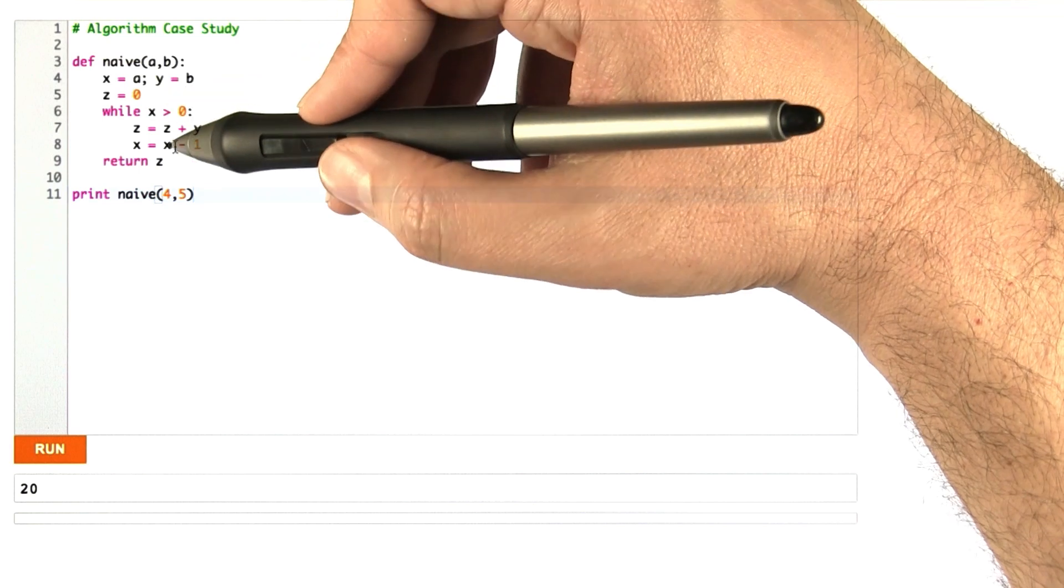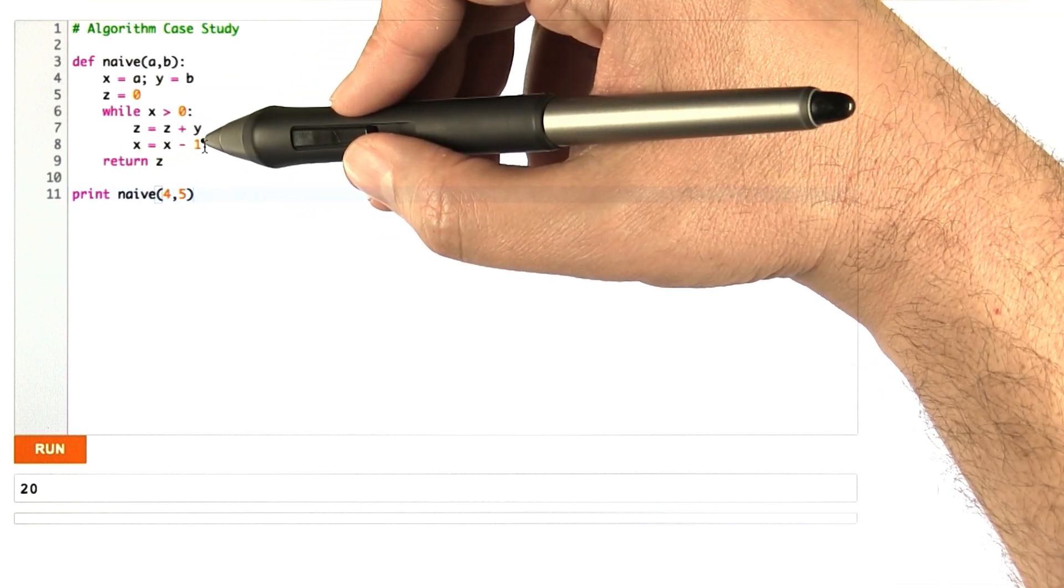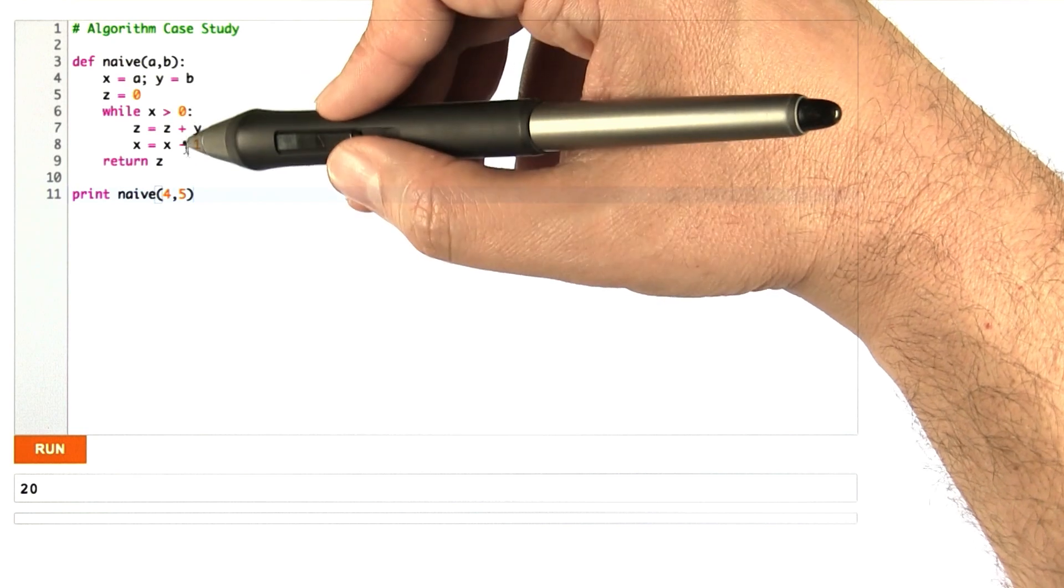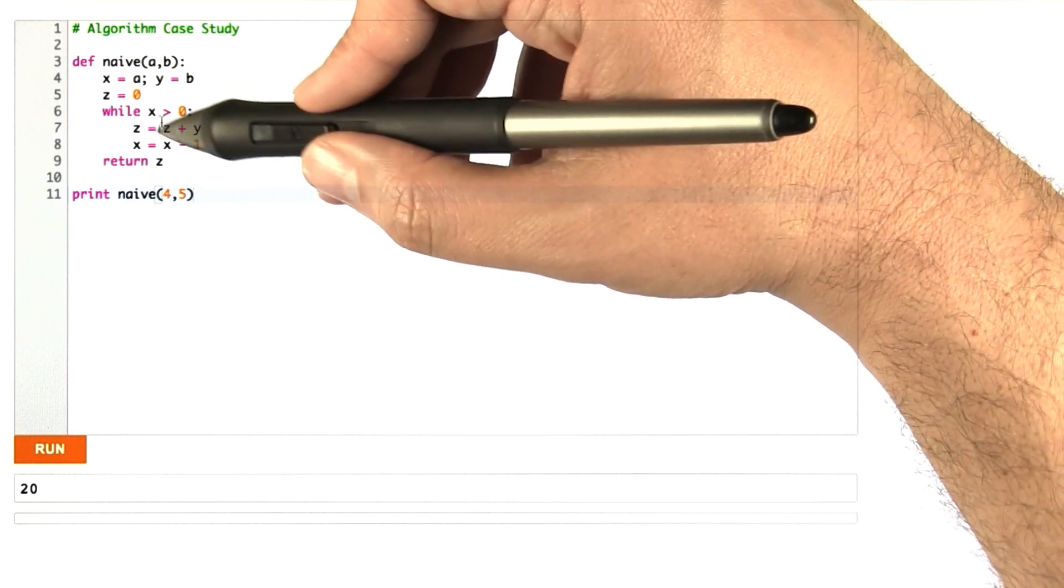And then what we're going to do is we're going to keep decrementing x, keep subtracting one from x until it hits 0. And each time we subtract one from x, we add y into z.